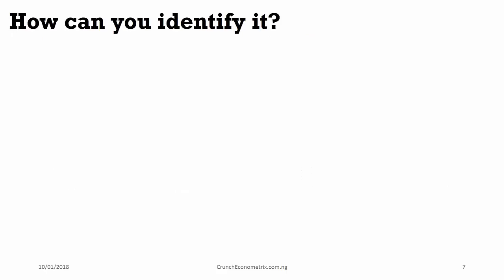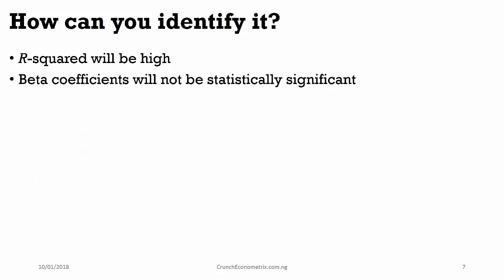How can you identify multicollinearity in the model? How do you know whether your model is suffering from multicollinearity? You will observe that your R squared is high.